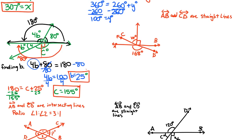Let's take a look at another example. It's really good to see as many examples as you can with these different angle relationships. Here we're looking for w. The important information given is that line AB is a straight line, meaning from one end to the other is 180 degrees. We also know that line CD, using the same vertex, is also 180 degrees. Let's see if we can use that to find the missing angle w.